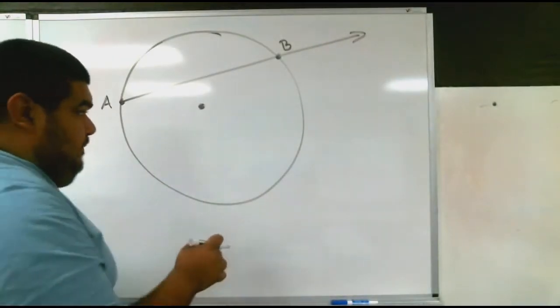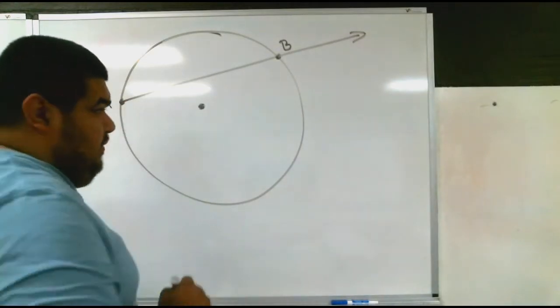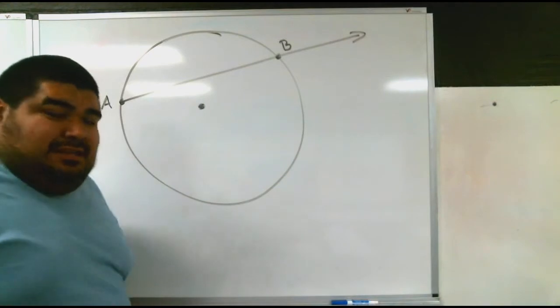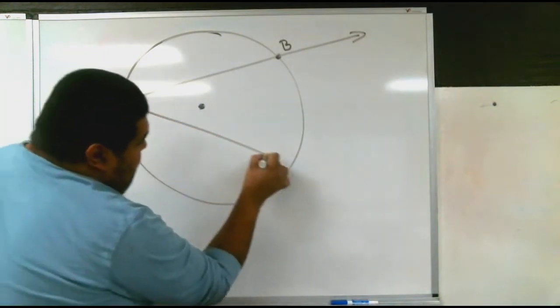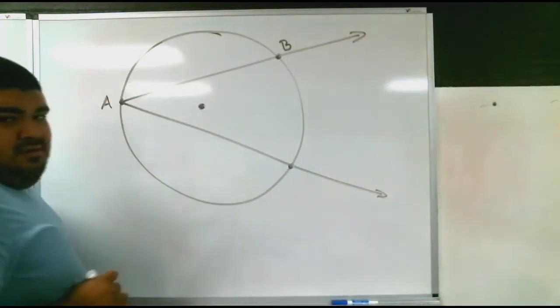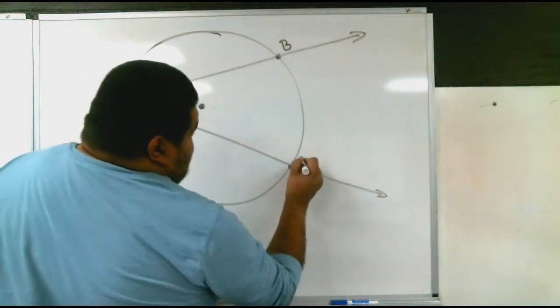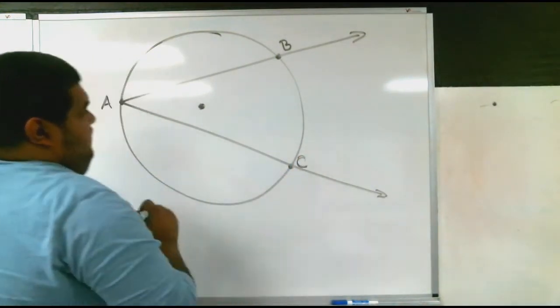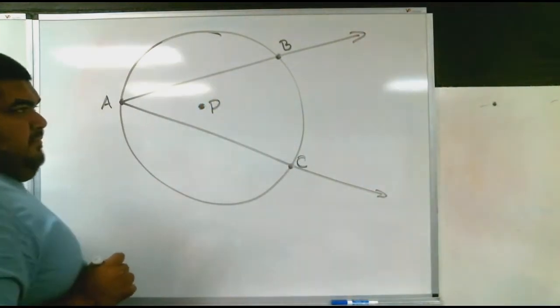But we have another chord—not only a chord, it's also a secant in a way. It goes from A, creates another vertex named C. The circle is named P.